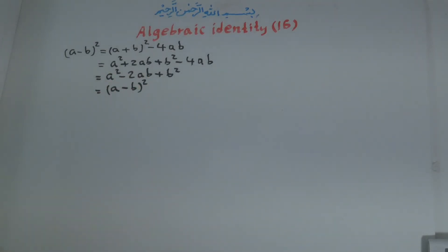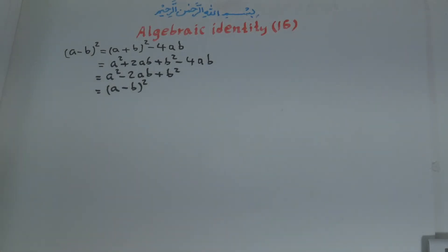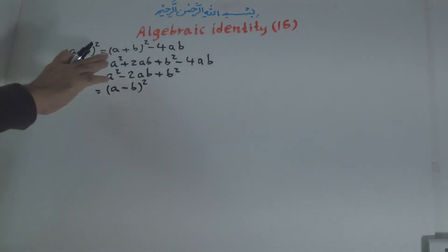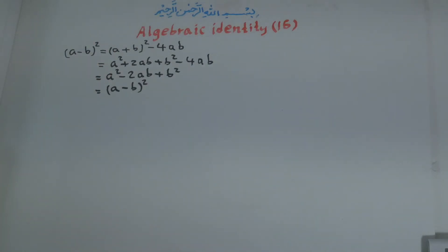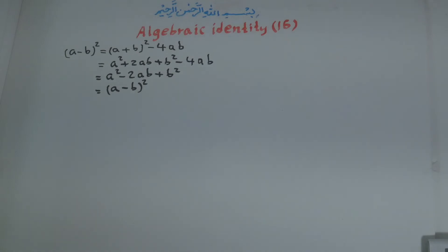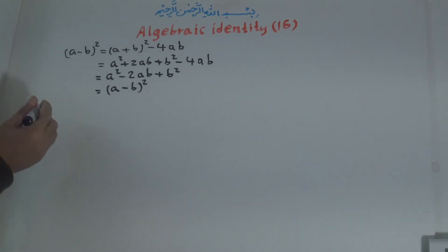So we have proven that (a - b)² is equal to (a + b)² minus 4ab. For further clarification of this identity, we will now solve an example.